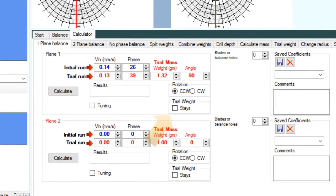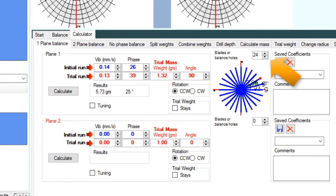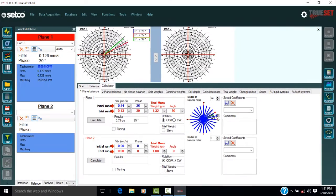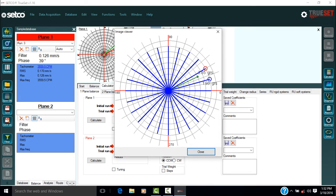If the trial weight is not being removed, check the stays box. For this example, the trial weight is being removed. Click Calculate. Enter the number of balance holes in the blades or balance holes box, if they are present. If there are no balance holes, enter zero.